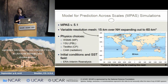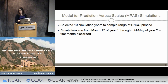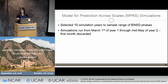Our initial conditions and SSTs are taken from the ERA-Interim reanalysis. We chose 10 years to simulate for this study, selected based on varying phases of ENSO — a couple strong La Niña years, strong El Niño years, and several neutral years. Our simulations run from March 1st of the first year through mid-May of the second year. We chose this time span to encompass the full TC season (June to November), with shorter months on either side to account for possible shifts in TC seasonality in our future simulations, and we continue through a full winter season so they can be used for a variety of research projects.